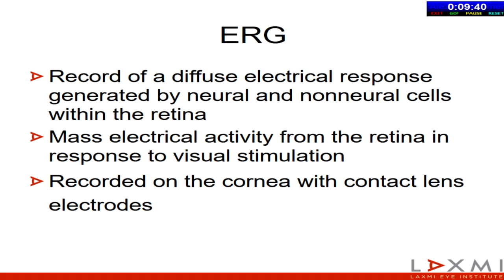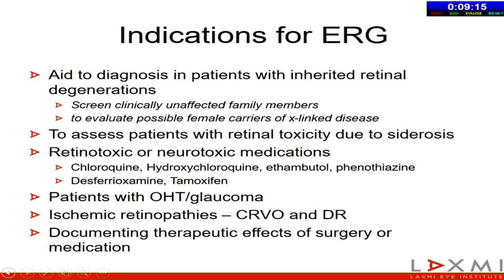Let's start with ERG — this is something everybody should know. It's a mass electrical activity from the retina that is measured. An important point is that one may have a small foveal pathology that is missed with a normal ERG. Generally it's recorded with contact lens electrodes, but nowadays skin strip electrodes can also record the ERG. Clinically, these are the major indications for which one would request an electro-retinogram.